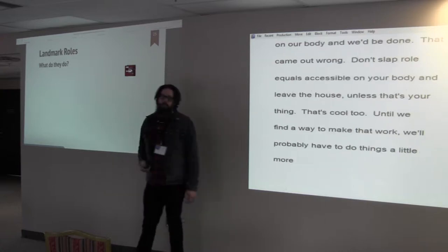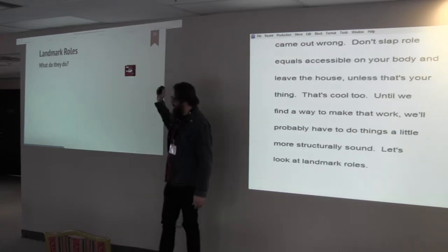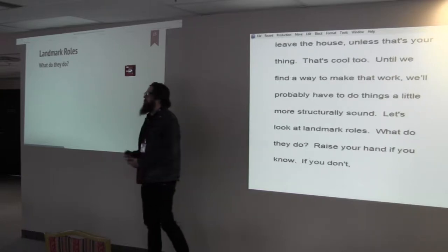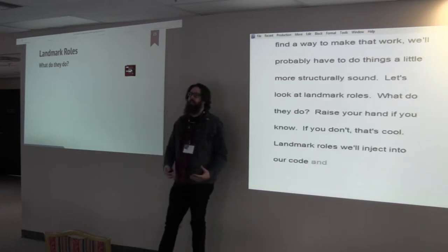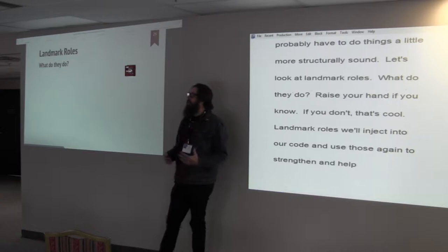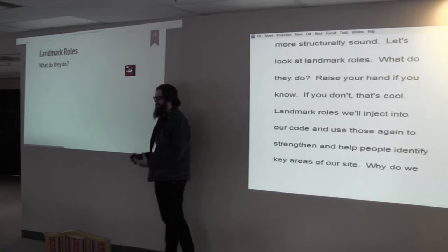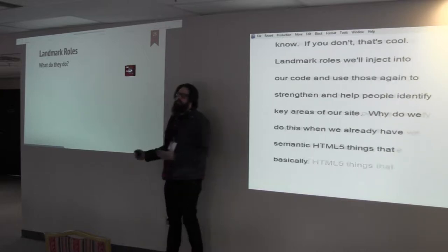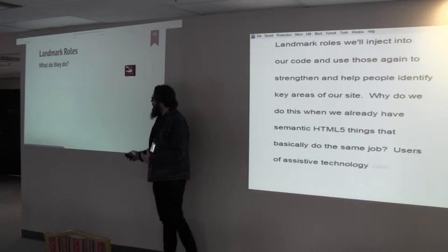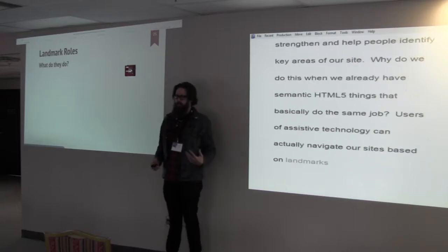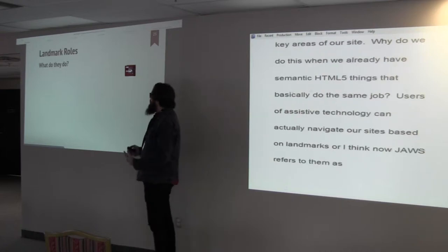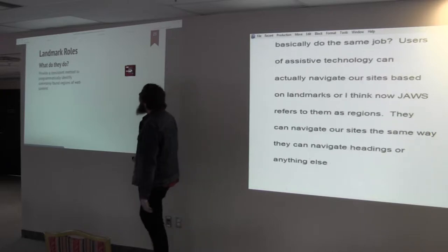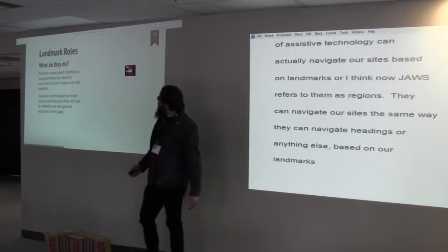Let's look at landmark roles. What do they do? Raise your hand if you know about landmark roles already, so I can just blast through this stuff. So landmark roles we're going to inject into our code, and we're going to use those to strengthen and help people identify key areas of our site. Why do we do this when we already have semantic HTML5 that basically do the same job? Users of assistive technology can actually navigate our sites based on landmarks, or I think now Josh refers to them as regions. So they can navigate our sites the same way that they would navigate headings or anything else. They can do that based on our landmarks.